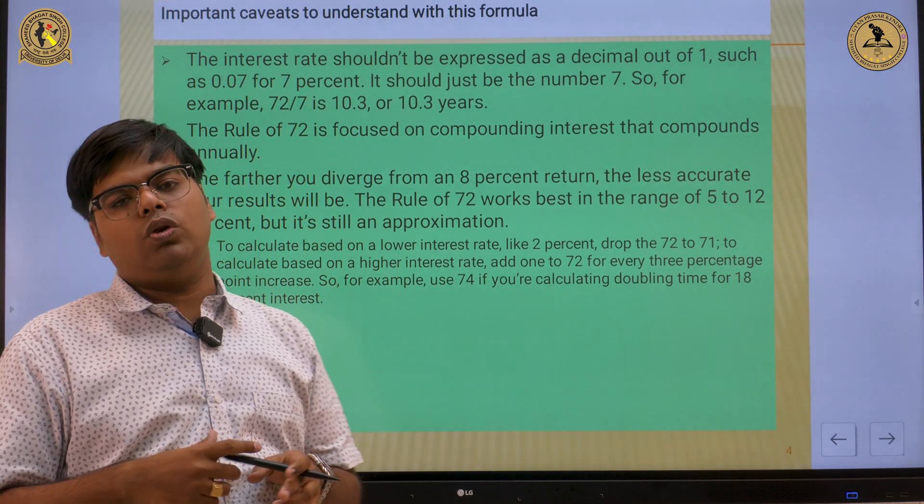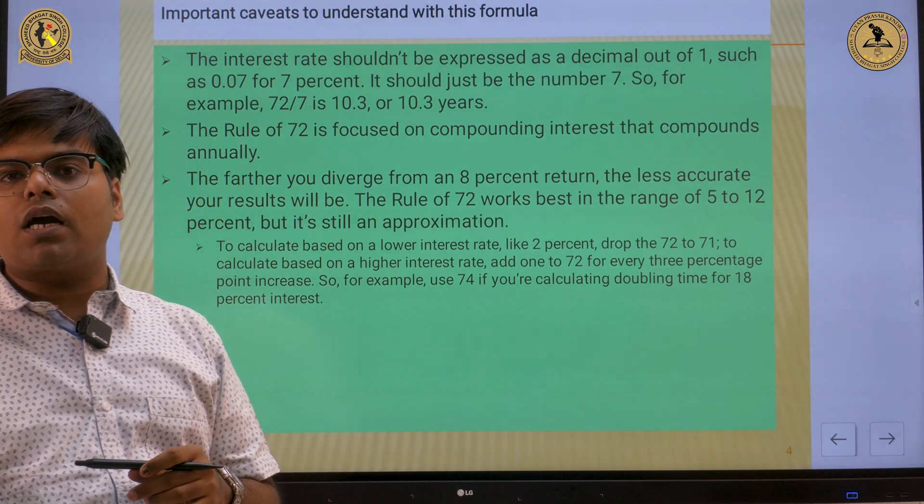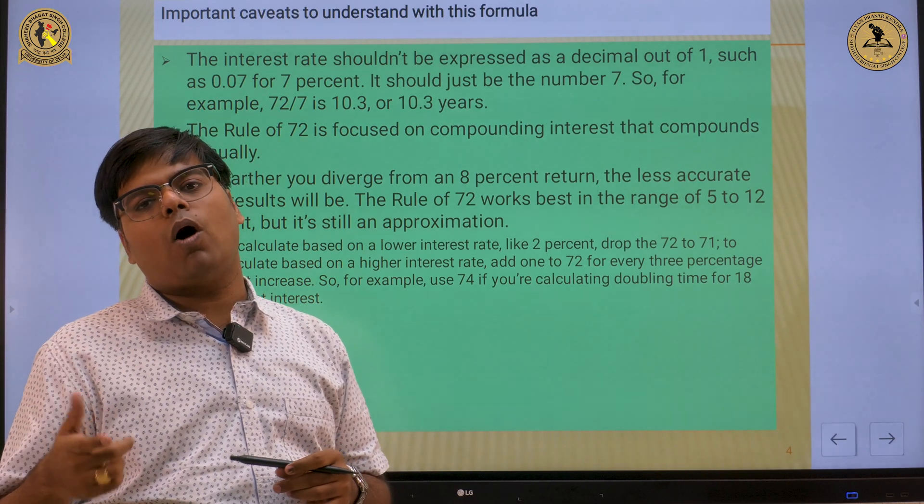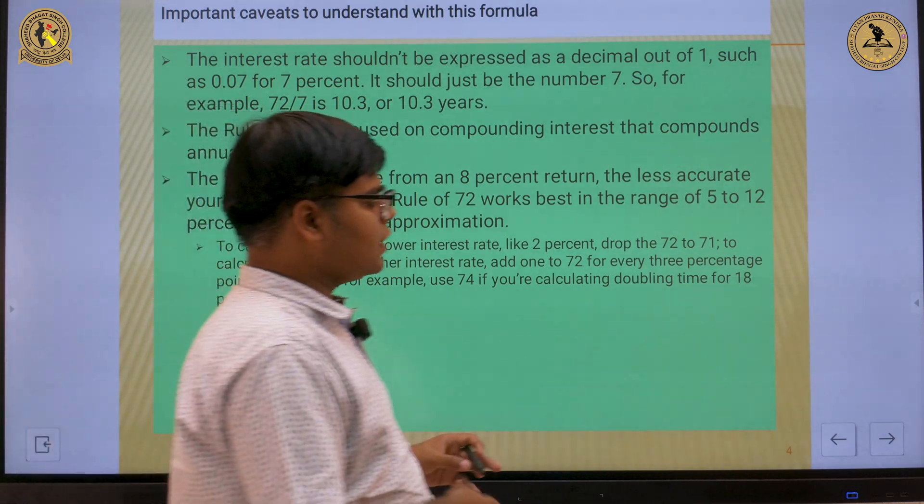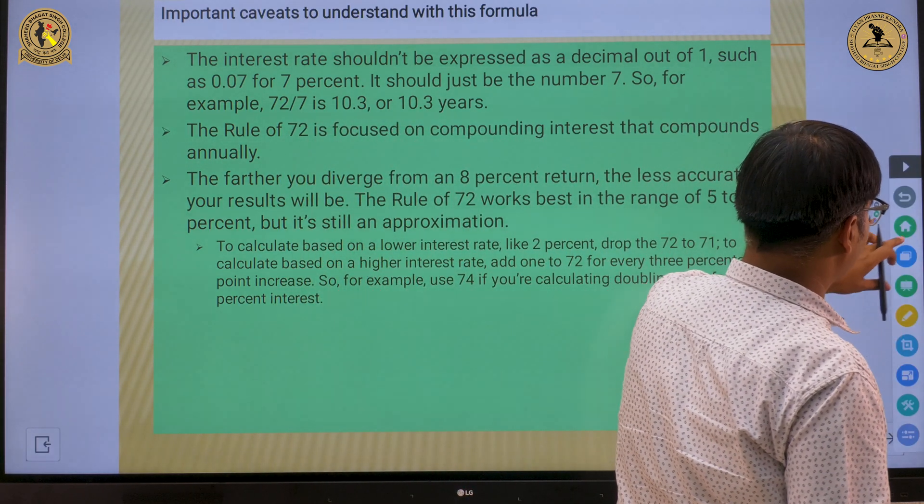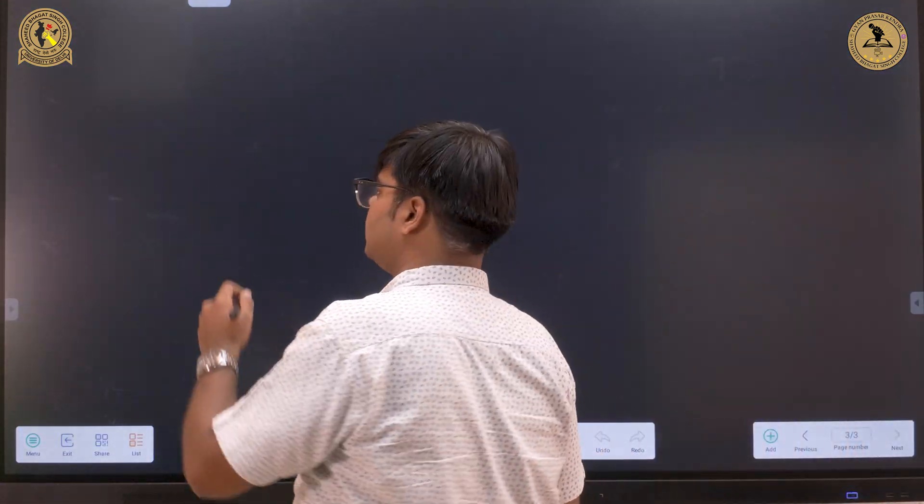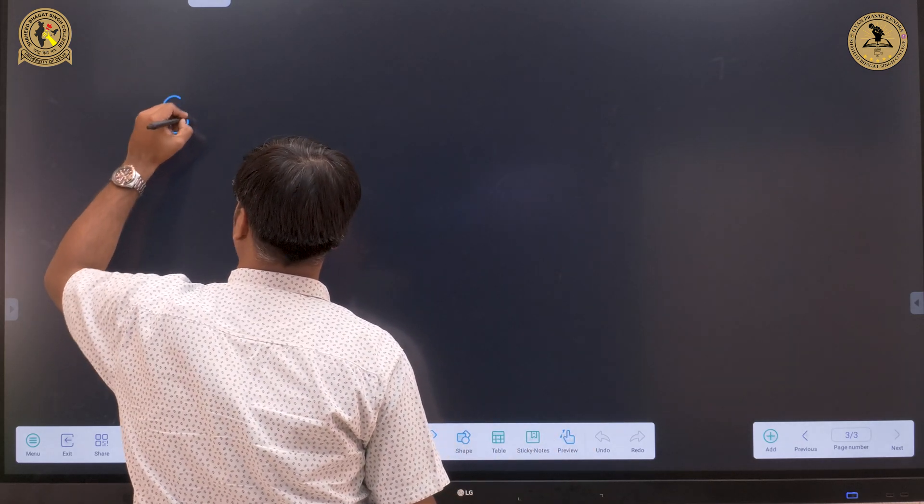Number two: this rule is applicable only on the compound interest rate, that is on something that compounds every year. Friends, there are two types of interest rates. One is the simple interest rate and the second one is the compound interest rate.